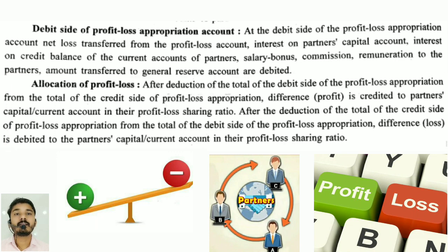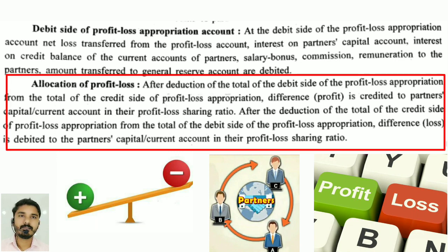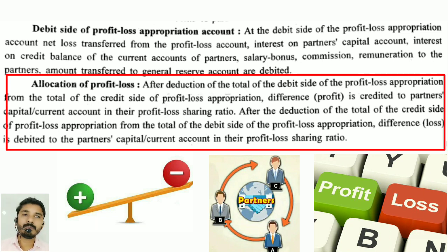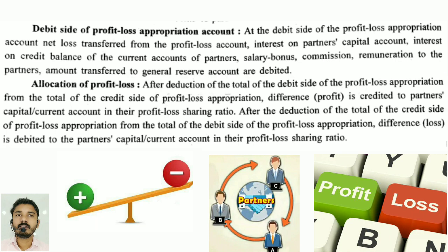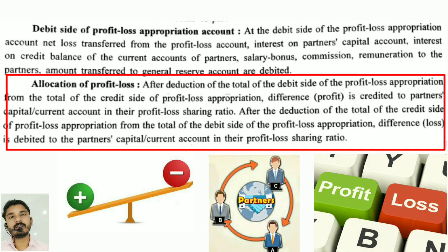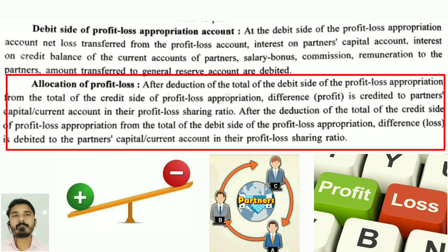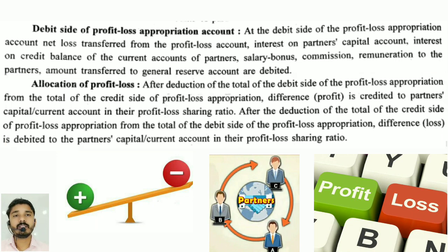Amount transferred to General Reserve Account is also debited. After deducting the total of the debit side from the total of the credit side of the Profit and Loss Appropriation Account, the difference (profit) is credited to partners' capital or current account in their profit and loss sharing ratio. Conversely, if the total of the debit side exceeds the credit side, the difference (loss) is debited to the partners' capital and current account in their profit and loss sharing ratio.